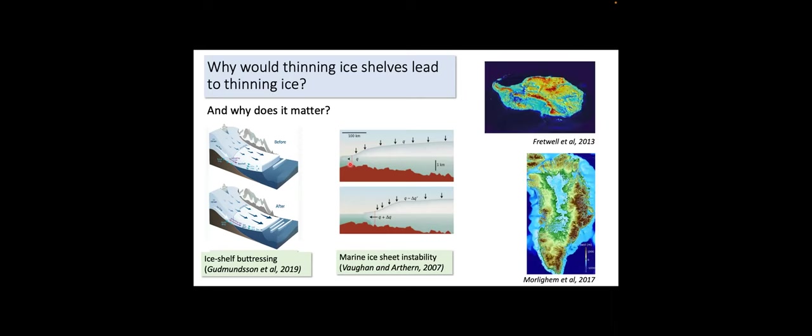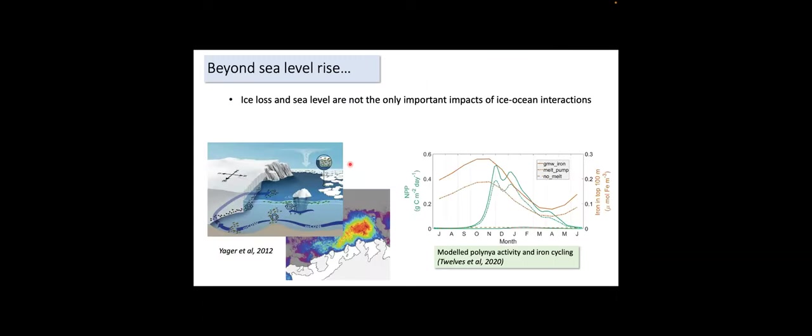In a situation where the ice sheet sits on a bed that deepens inland, that sets up a recipe for instability: a small amount of retreat due to ice shelf thinning leads to greater tendency to thin, greater retreat — a process that feeds on itself. Around the margins of Antarctica and Greenland, there are areas where the bed is below sea level and deepens inland, and these processes may play a strong role in the coming centuries.